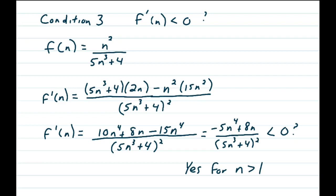Doing some simplifying, we have the derivative equaling 10n to the 4th plus 8n minus 15n to the 4th over the quantity of 5n cubed plus 4 squared. Now, we then simplify that to get negative 5n to the 4th plus 8n over that 5n cubed plus 4 squared. Is that less than 0?